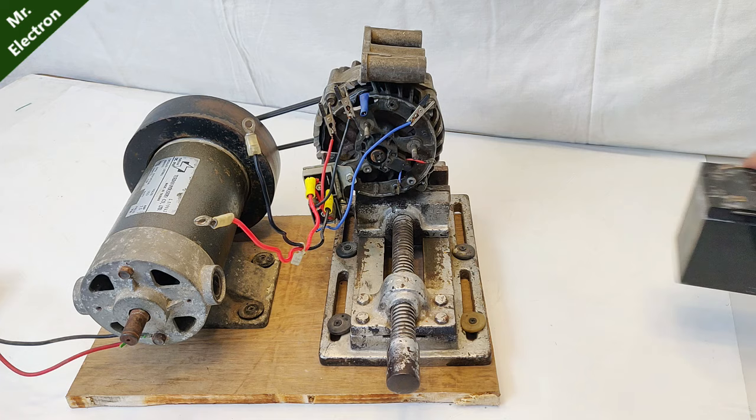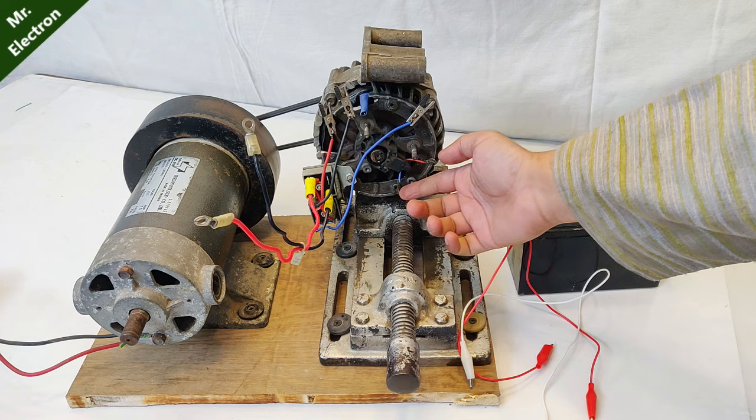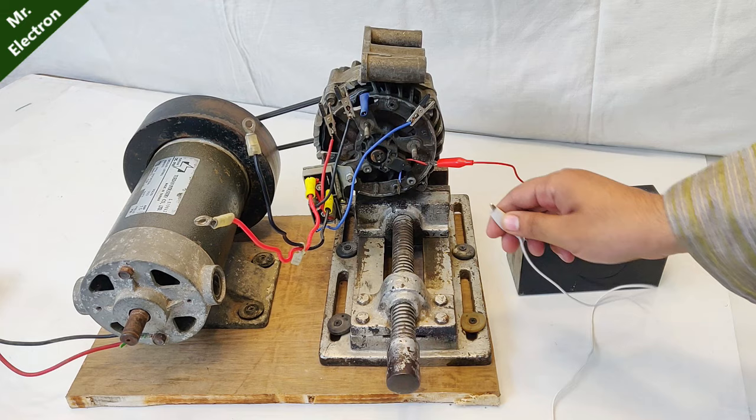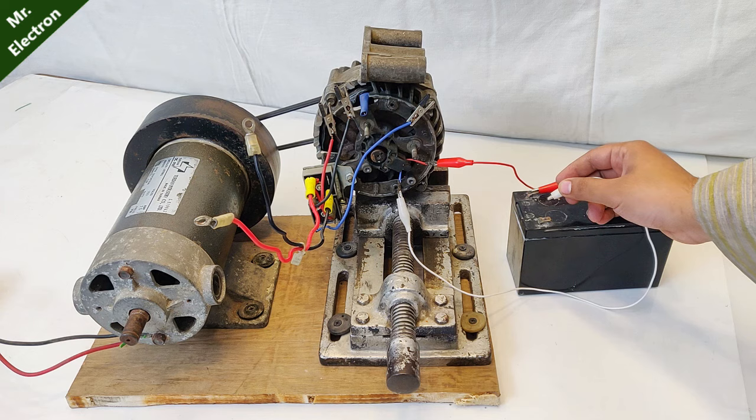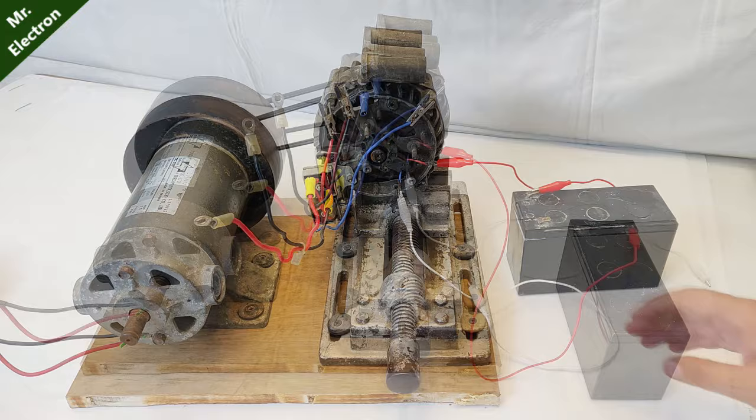So guys, now it's time to connect this 12 volts UPS battery and these two jumper cables to the rotor winding terminals of this alternator. Okay, red will be connected to red and blue is going to be the negative, although polarity does not matter here. And you see the connection has been successfully made.